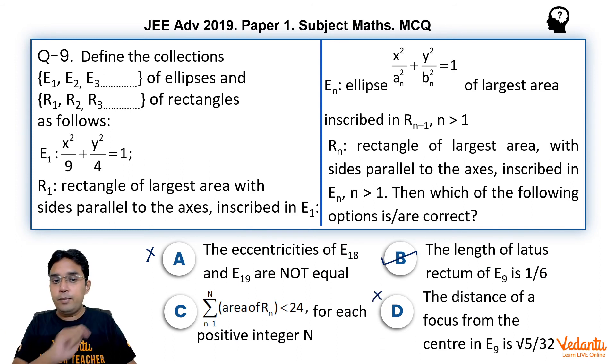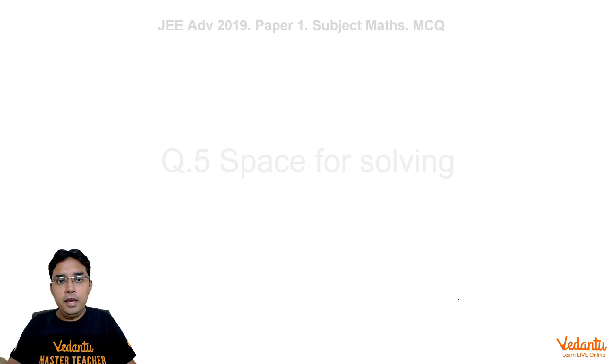Now let us come to C part which is asking the sum of areas of all rectangles as n varies from 1 to N for every positive value of capital N. Now as I was telling you, for R1 we got area of this is 12. And if we find R2, as it was for ellipse, it will be same for second rectangle also, that its corresponding sides will become 1/√2 times of its previous rectangle.